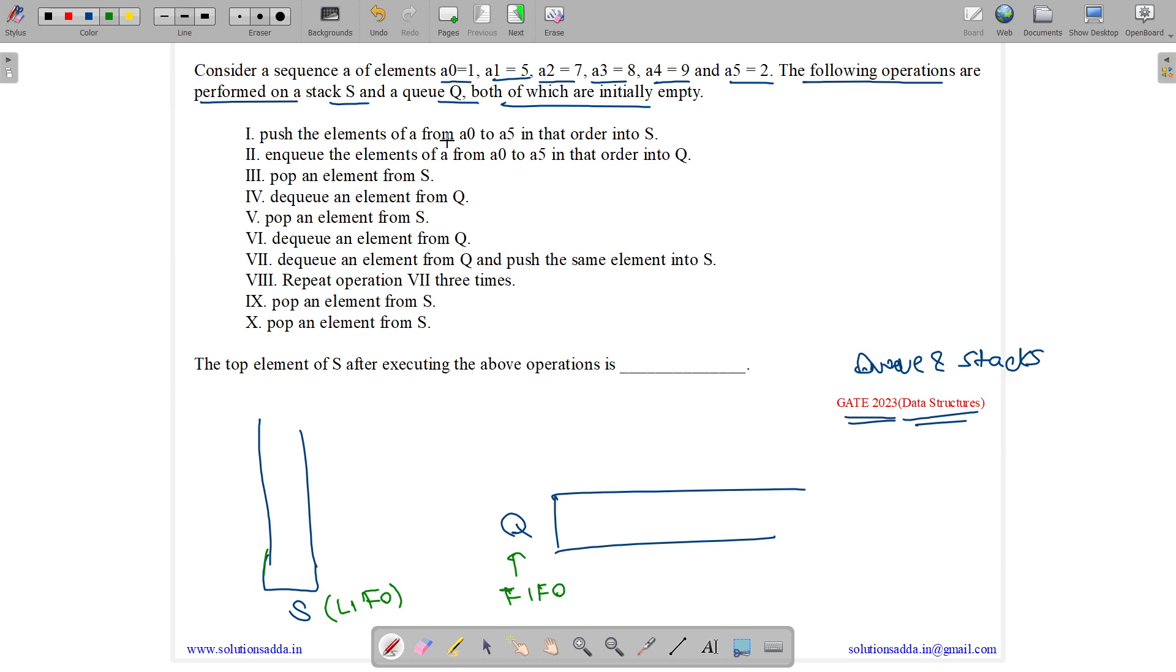Push the elements of A from A0 to A5 in that order into S. So we will push in stack. So we have 1 followed by 5, followed by 7, followed by 8, followed by 9 and a 2.